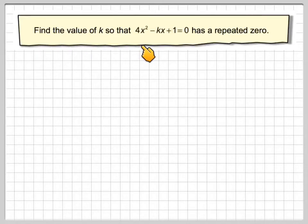Find the value of k so that 4x squared minus kx plus 1 equals 0 has a repeated zero.